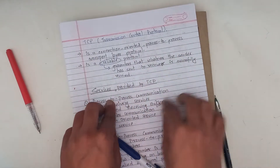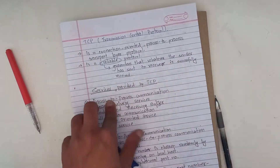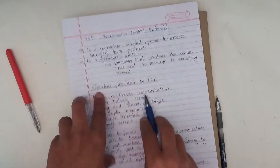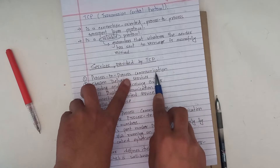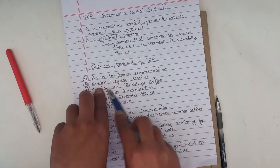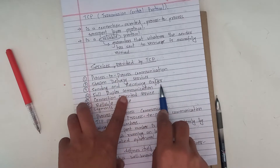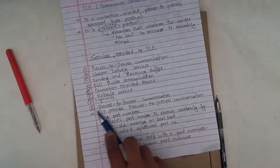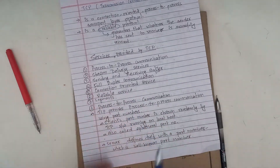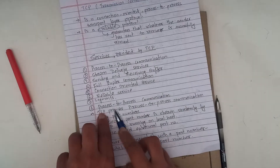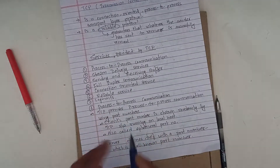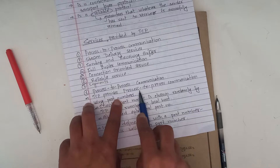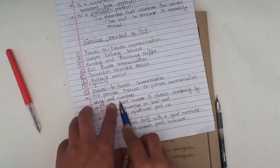So, the services provided by TCP include: process to process communication, stream delivery service, sending and receiving buffer, full duplex communication, connection-oriented service, reliable service, and segments. Let's see each one by one. TCP provides process to process communication using port numbers.